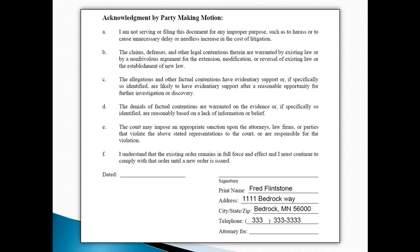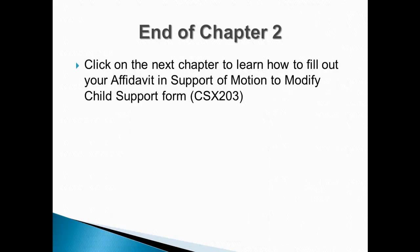On the last page of your motion paperwork, print your name, address, and telephone number, then sign and date the form when you are finished with all of your forms. This is the end of Chapter 2. Click on the next chapter to learn how to fill out the Affidavit in Support of Motion to Modify Child Support.